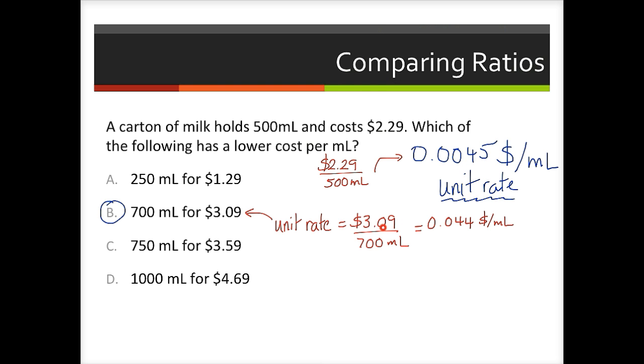And so if we look at item B, which was the correct answer, if we divide the dollars by the milliliters, we get $0.044 per milliliter. So when you're finding a unit rate, please be careful to look at the units of the two numbers that you're dividing to find the rate. And that will tell you the units of your rate, and then you'll know what to do with it, whether to multiply or divide, or whether it needs to be lower or higher to compare it to another unit rate.